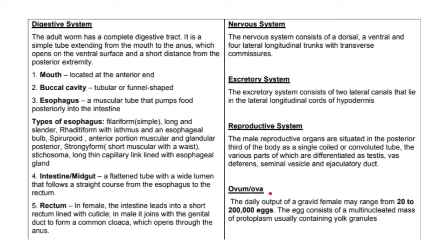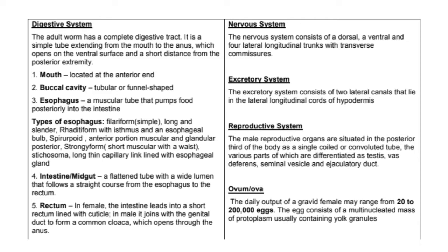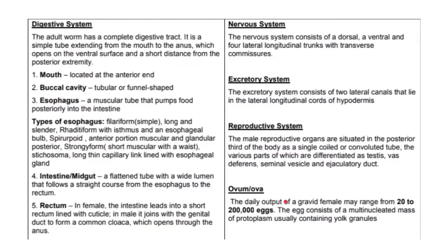The daily output of a gravid female may range from 20,000 to 200,000 eggs. The eggs consist of a multinucleated mass of protoplasm usually containing yolk. Imagine just one gravid female worm can lay up to 200,000 eggs daily — so in a perfect scenario if all hatch, 200,000 worms could be present inside you. The next slide shows the structures we discussed, like the digestive and reproductive systems, as seen on the worm.